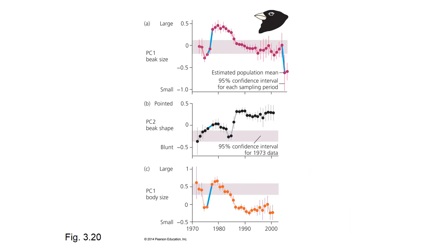The take-home messages from these data are that natural selection can lead to changes in populations — whether you're a virus or a finch or any other organism — as long as those four postulates are taking place. These data show 30 years of change in finch phenotypes as measured by Peter and Rosemary Grant in response to changes in their environment. What caused the change? Natural selection.